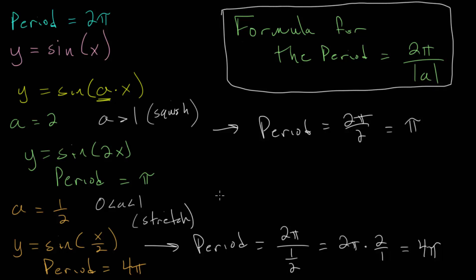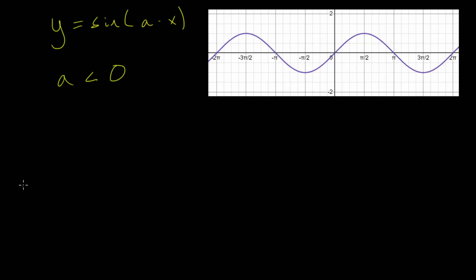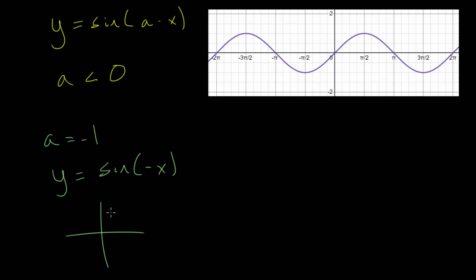Now we consider what happens when a is a negative number. We have y = sin(ax), and we'll start with the special case a = −1, giving y = sin(−x). We can use the unit circle to plot points: on the unit circle, the x-value at any point is the cosine of the angle and the y-value is the sine of the angle.